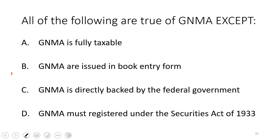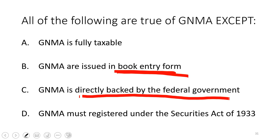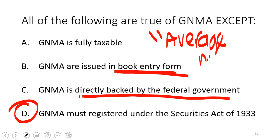All of the following are true of Ginnie Mae — high probability topic. Ginnie Mae is fully taxable; all government securities are book entry (no physical certificate); Ginnie Mae is directly backed by the federal government; the U.S. government and its GSEs are exempt from the Securities Act of 1933 and can sell new securities without making a registration statement with the SEC. In the secondary market, Ginnie Maes trade on average maturities of the mortgages in their portfolios. There's a separate lecture on Ginnie Maes and CMOs in the SIE playlist.